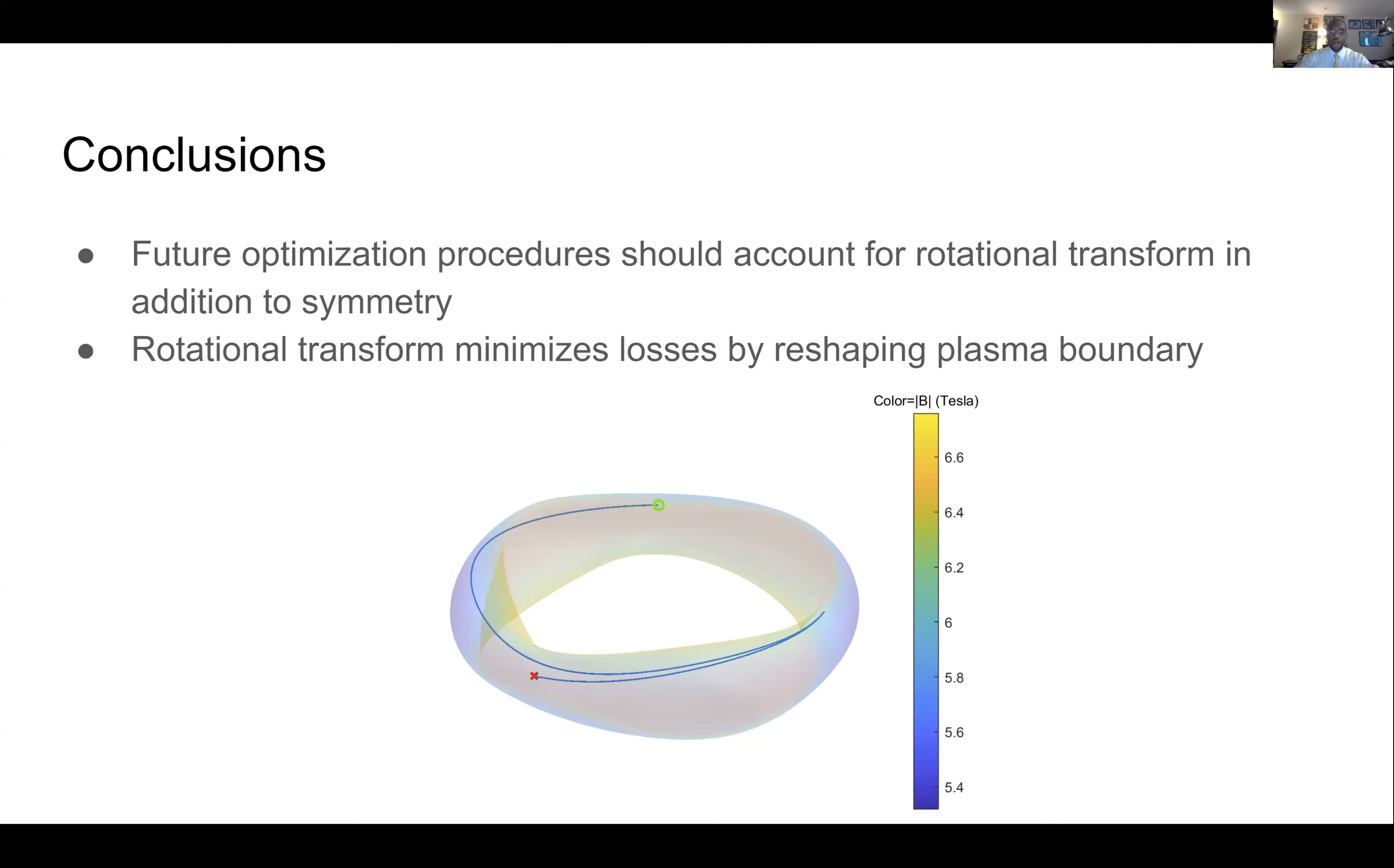So for the future, we need to put more emphasis on rotational transform in the optimization process. We know quasi-symmetry works. We know it does the job. We know it does kind of what we want it to in that it eliminates ripple trapped trajectories and gives us some decent confinement. But we know that there is a lot more room to go.